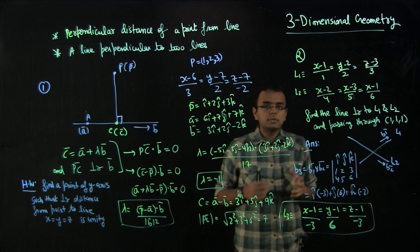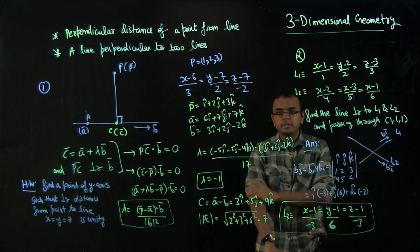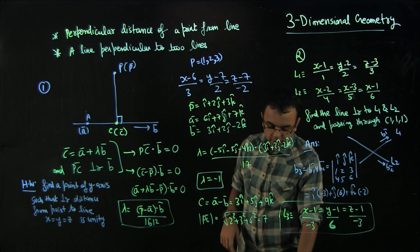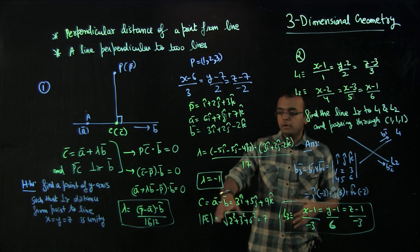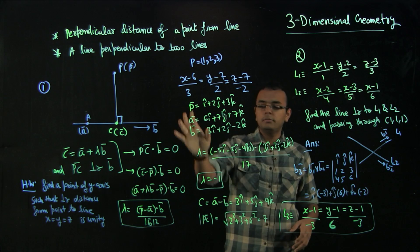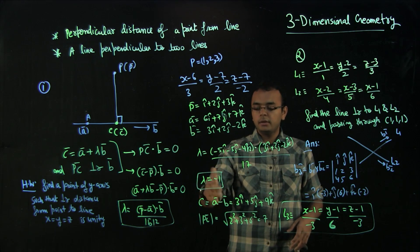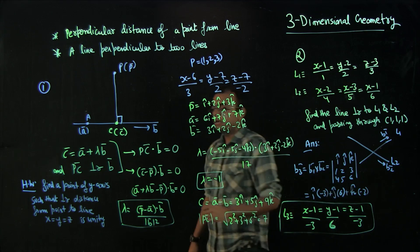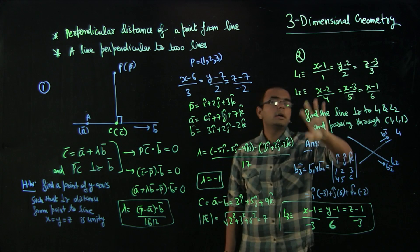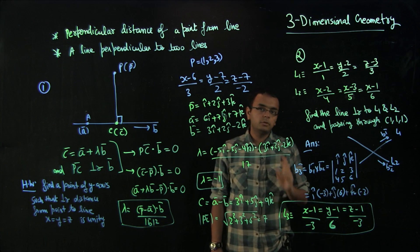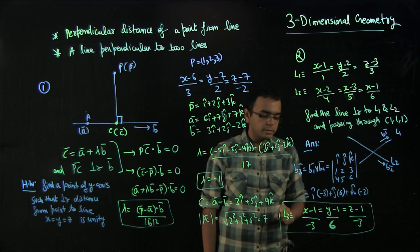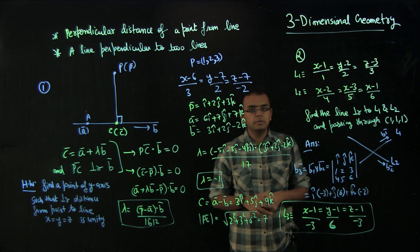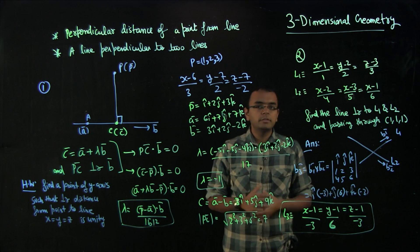I hope you understand how important vectors are here. We discussed two things: first, how to find the perpendicular distance of a point from a line — calculate lambda, find point C, then subtract coordinates to get the distance. Second, how to find a line perpendicular to two given lines — take the cross product of the parallel vectors to get the direction, then write the equation. I have given you a homework problem. I hope you enjoyed this video — there are more interesting topics in this chapter. See you in the next video. Thank you.